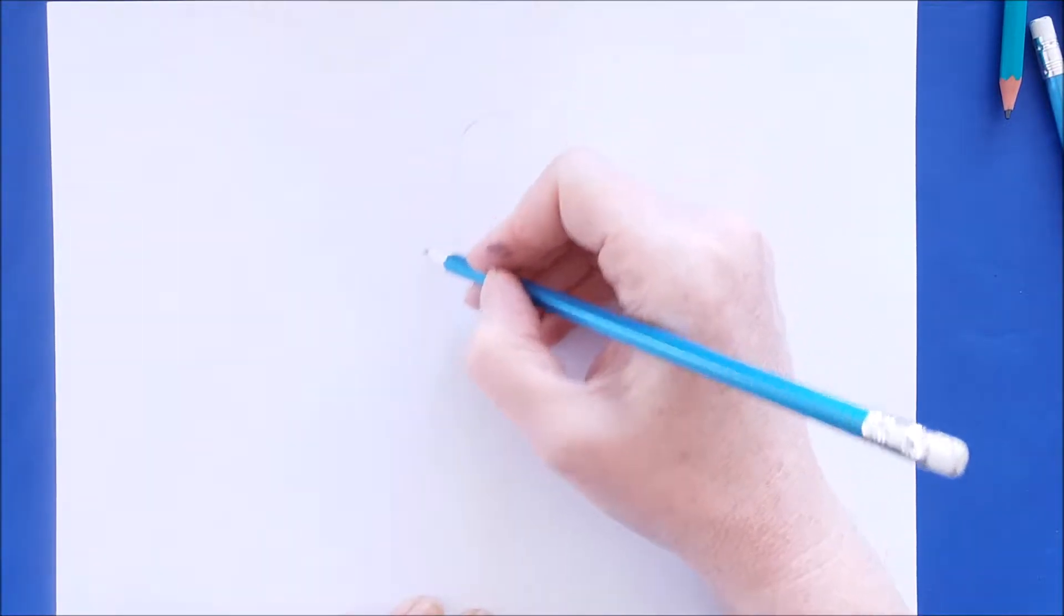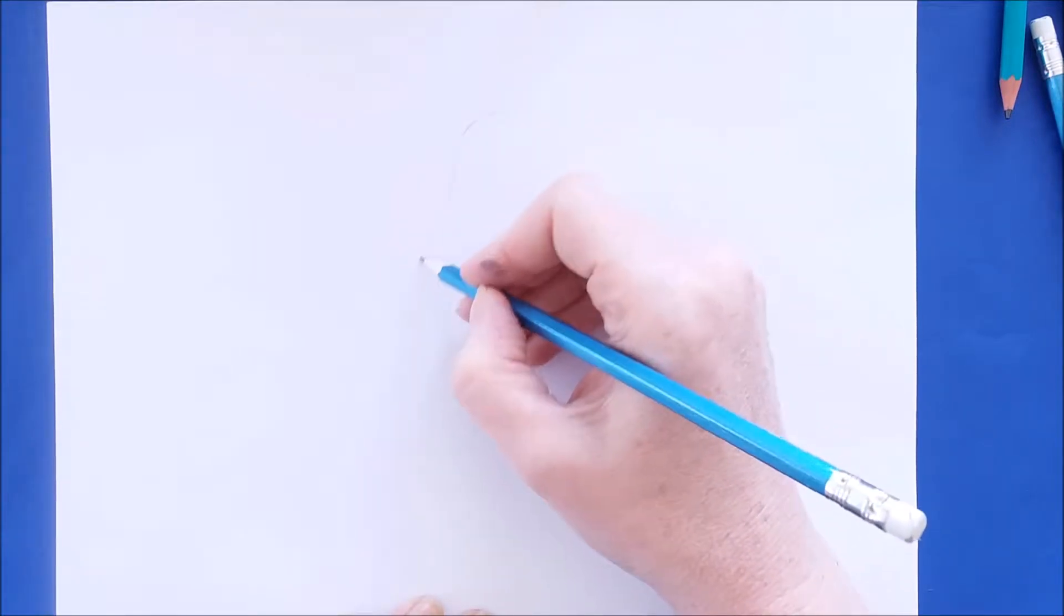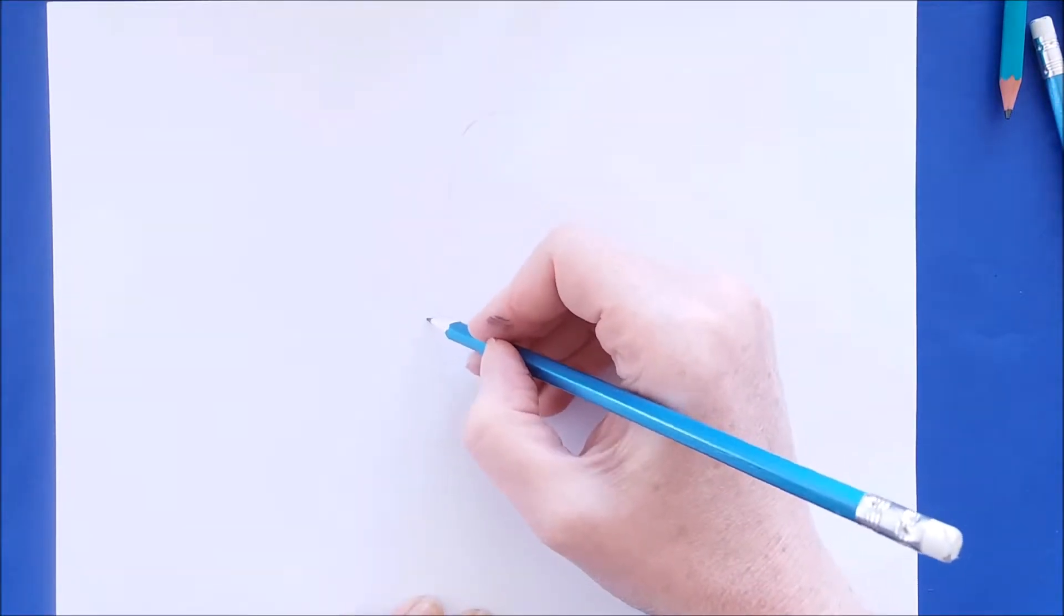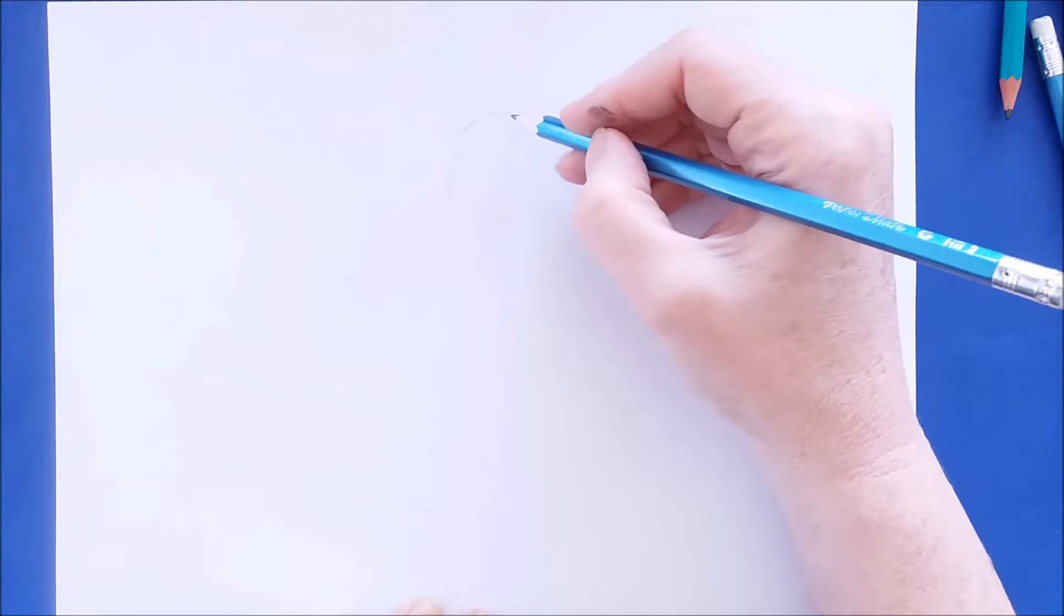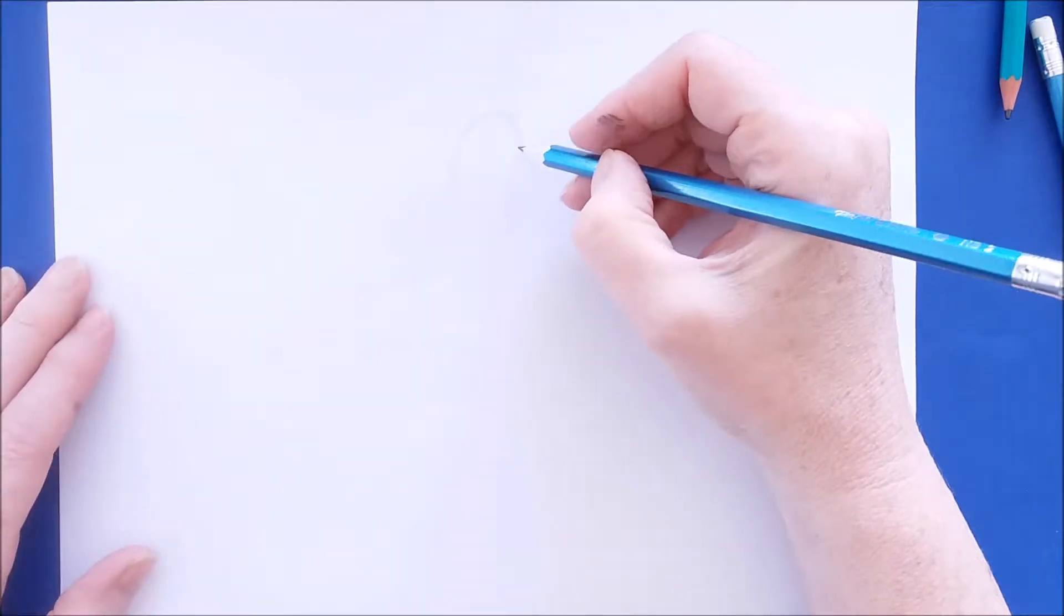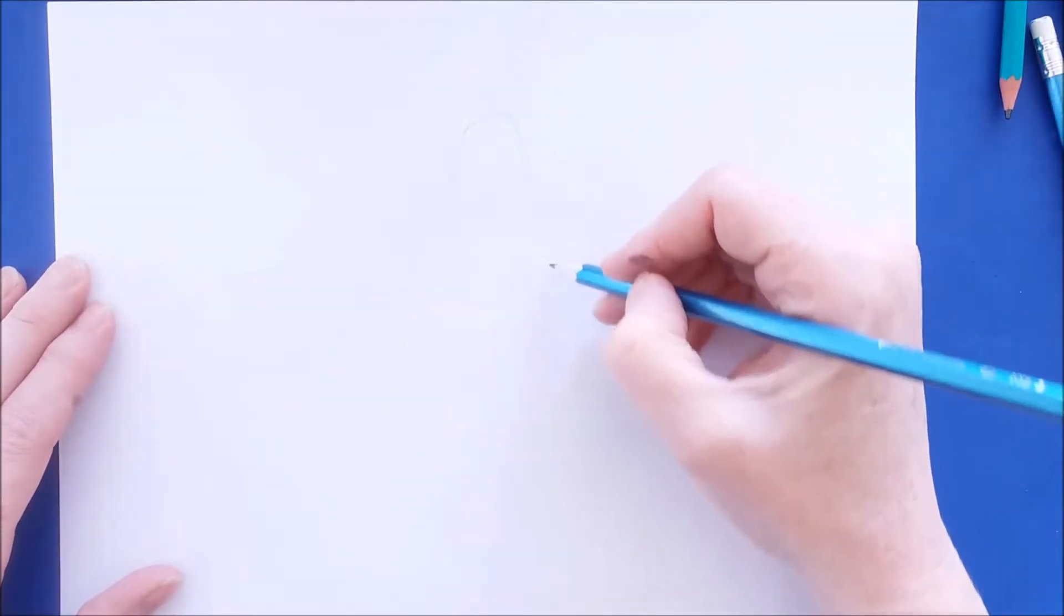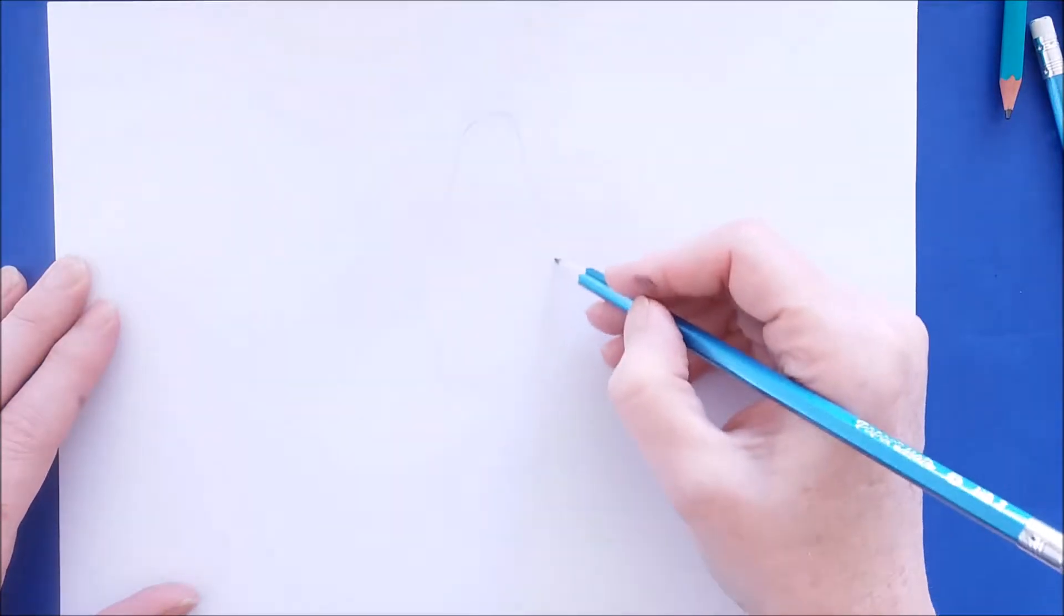So what I'm doing is just drawing a gentle curving downward line and then I'll do that on the other side of the seal. You want your seal to be kind of rounded and almost torpedo shaped.